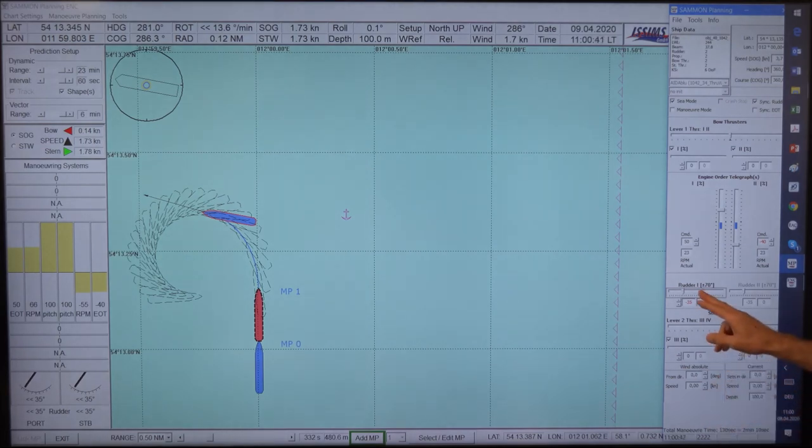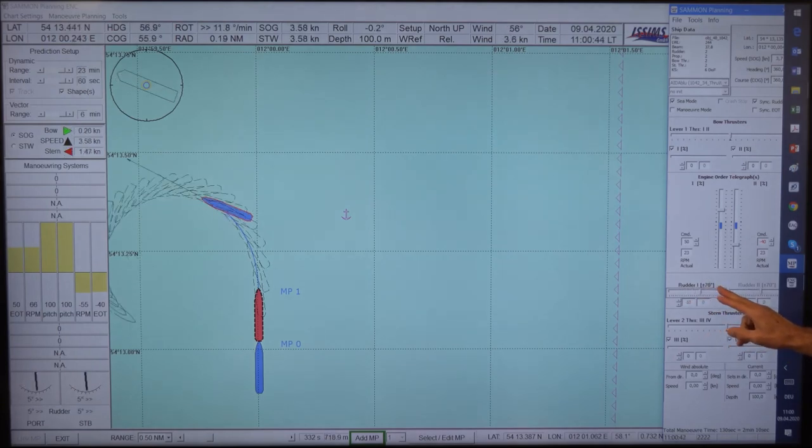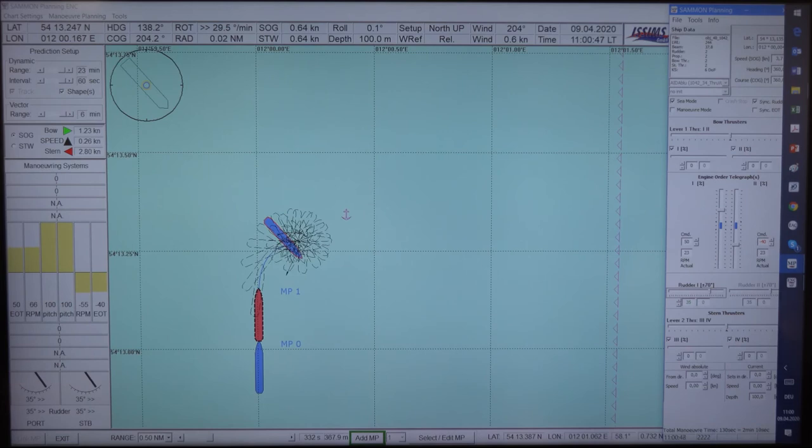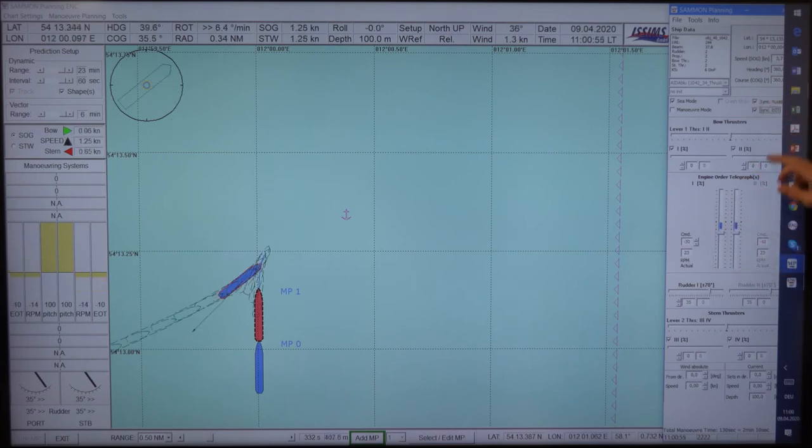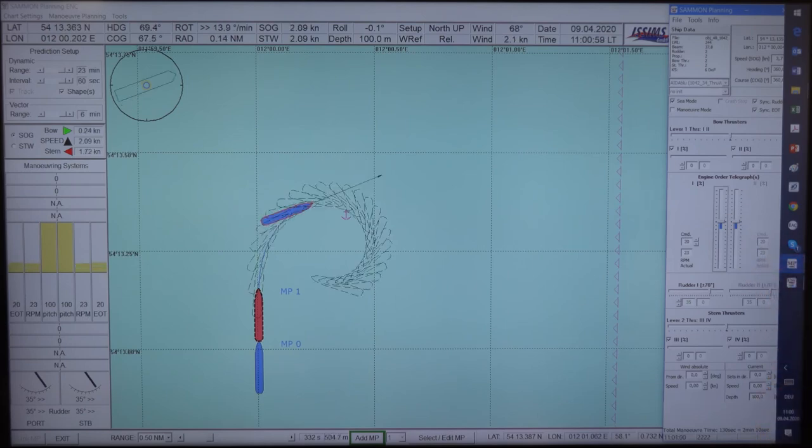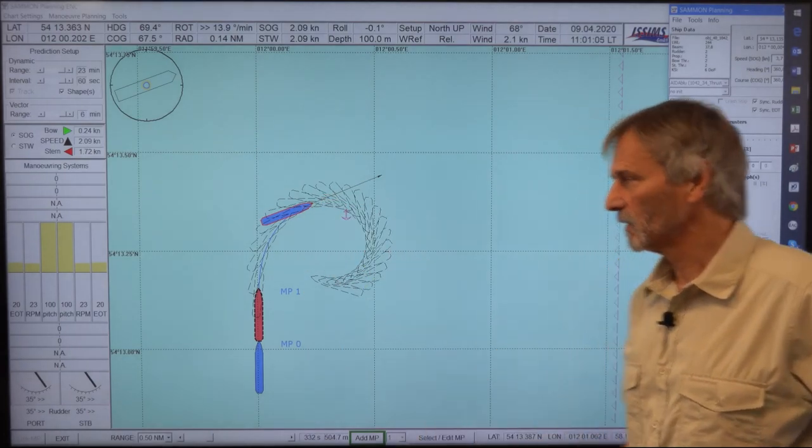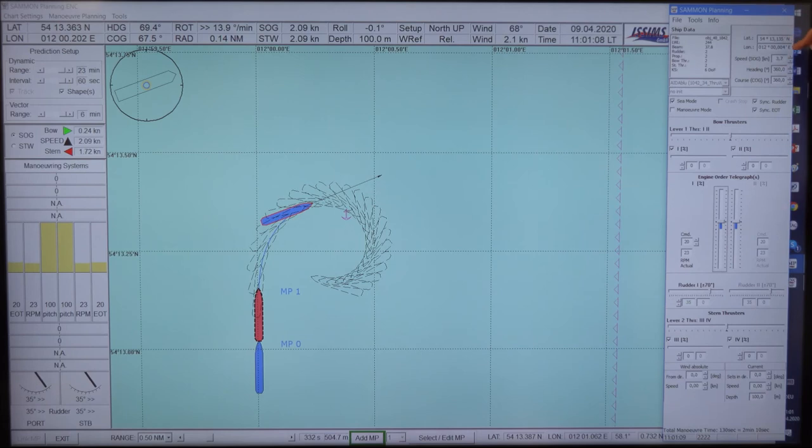So we go now back to the 35 degrees here and I will first switch back to the reference turning circle. This is our turning circle again with 35 degrees rudder to starboard and initial speed is 3.7 knots so the setting is 20 percent engine ahead.